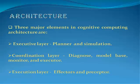Three major layers in cognitive computing architecture are: the executive layer, comprising planner and simulation; the coordination layer, comprising diagnose, model base, monitor, and executor; and the execution layer, comprising effectors and preceptors.